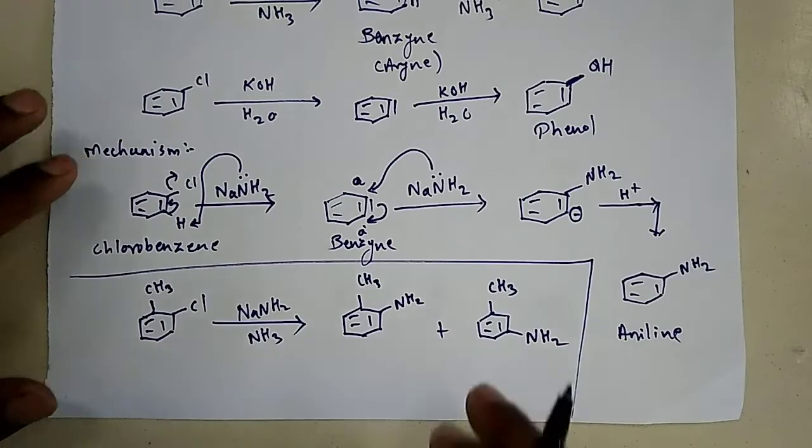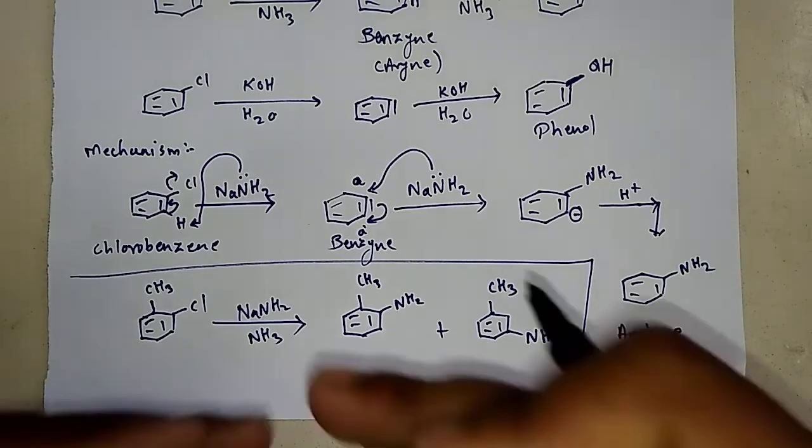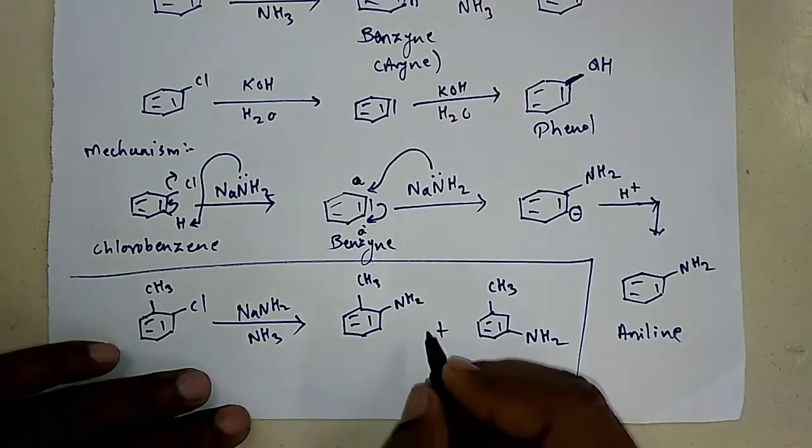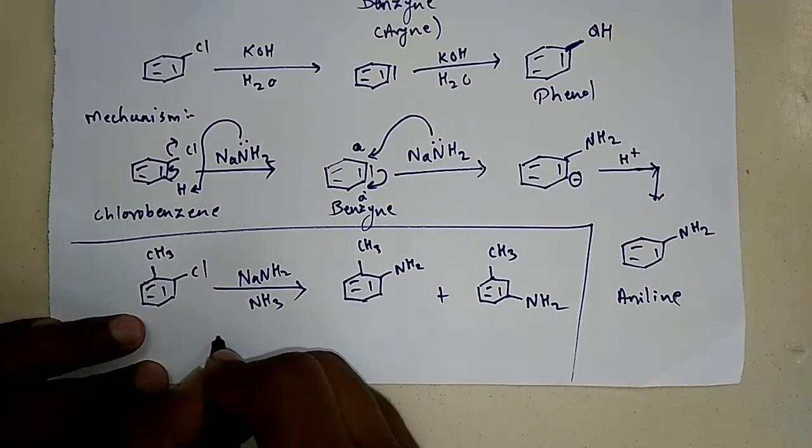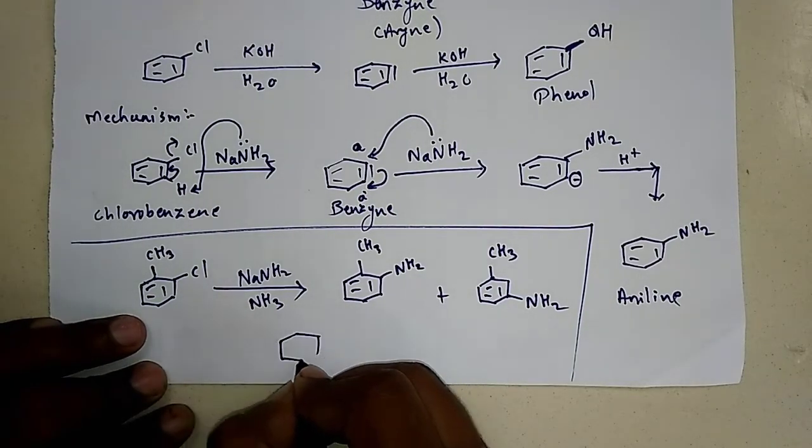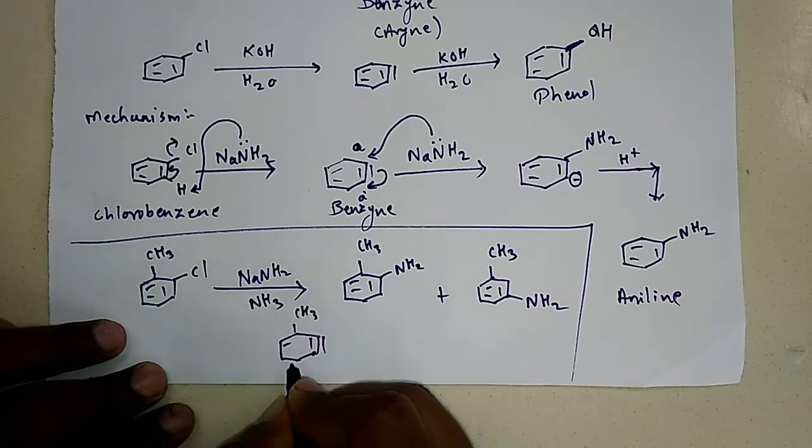We can get NH2 here at the ortho of methyl, and we can get NH2 at the meta of methyl. That is, 2-methyl aniline and 3-methyl aniline are being the products. But out of which, which would be the major one and which would be the minor one? For that, let's see how the intermediate is being formed, how the benzyne is being formed, methyl benzyne.